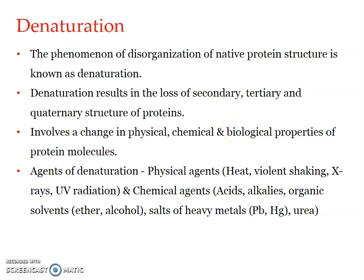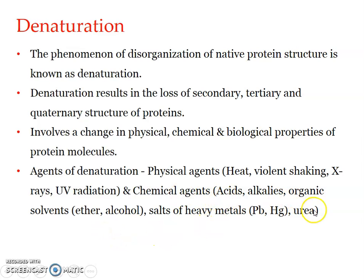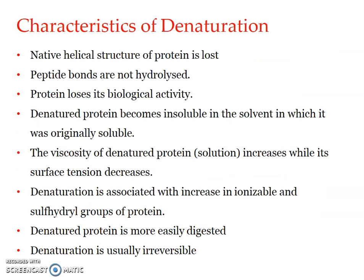The function of a protein is because of its structure. If a polypeptide chain is alpha-helical to bring about a specific function, and the alpha-helical structure is lost or disrupted, the function is also lost. What are the agents of denaturation? We can divide them into physical and chemical factors. Physical factors include heat, violent shaking, X-rays, UV radiations, etc. Chemical agents include acids, alkalis, organic solvents, salts of heavy metals, and urea. Cooking an egg is an example of denaturation by heat.